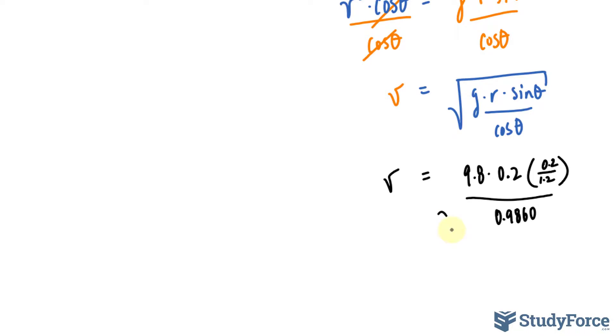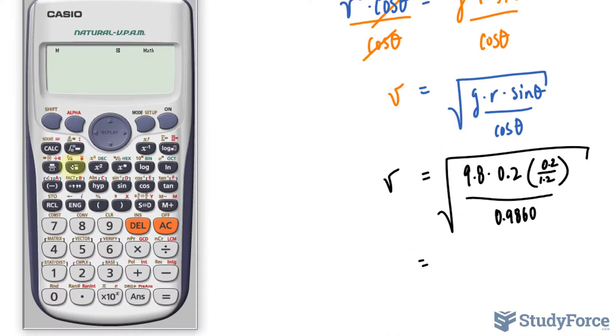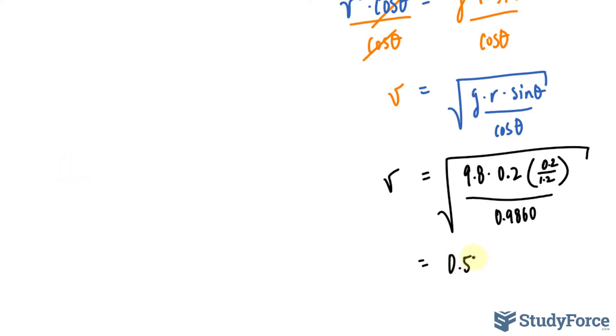And don't forget that this is being square rooted, so let's use our calculator. Here, the square root of 9.8 times 0.2 times bracket 0.2 over 1.2. And I'm going to place that all in parentheses. You can do this in steps if you like. I prefer to do it all in one shot. So take that, divide it by 0.9860, and we get 0.57 as the velocity, 0.575 meters per second.